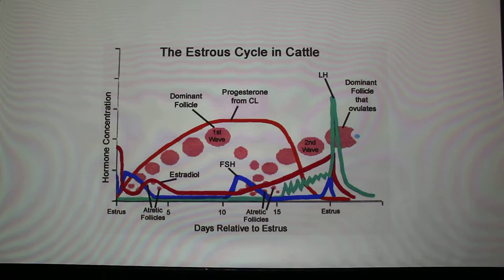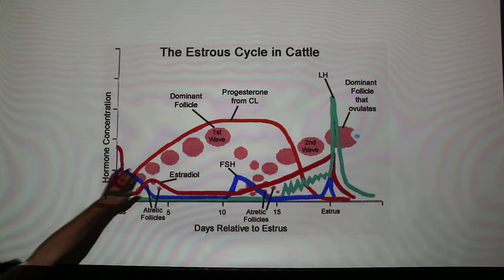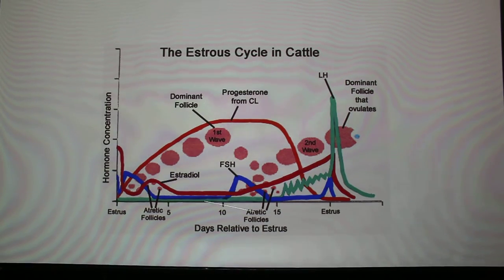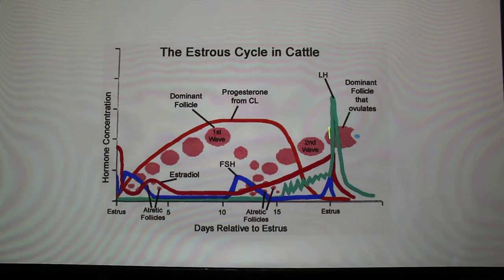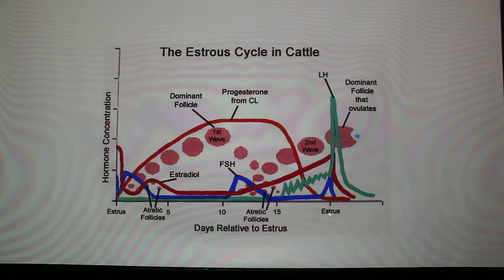There are waves of follicles on the ovary forming even when the animal is not in heat. They form but then they die — they undergo atresia. But if you were synchronizing estrus using prostaglandin F2-alpha, a luteolysin, and you killed the CL, these follicles might be the ones that ovulate, so they can ovulate more frequently than every 21 days. The LH spike from the brain actually causes the beginning of estrus, and then ovulation occurs 24 hours later.